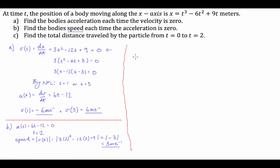Part C is probably the most complicated part. It asks us to find the total distance travelled by the particle from t = 0 to t = 2. What makes this complicated is that we need distance, not displacement — distance is a scalar quantity.